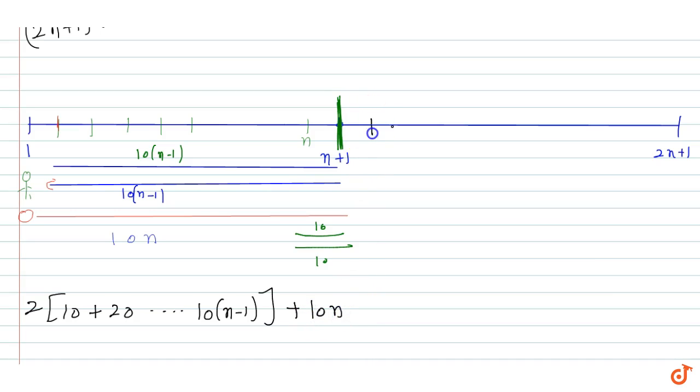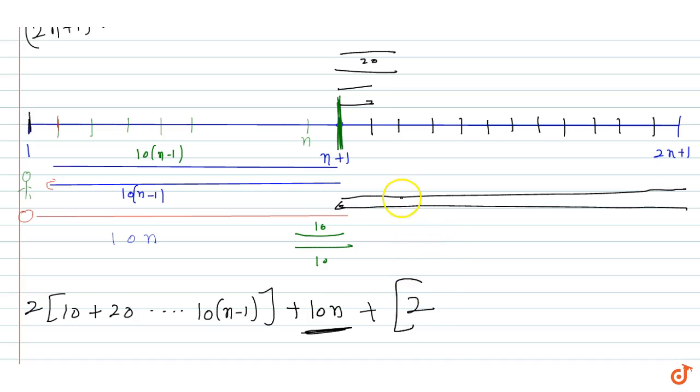For the right side, it's the same pattern. So all cases are two times, giving us 2 times the sum: 10 plus 20 plus 30 up to 10n, plus 10n at the end.